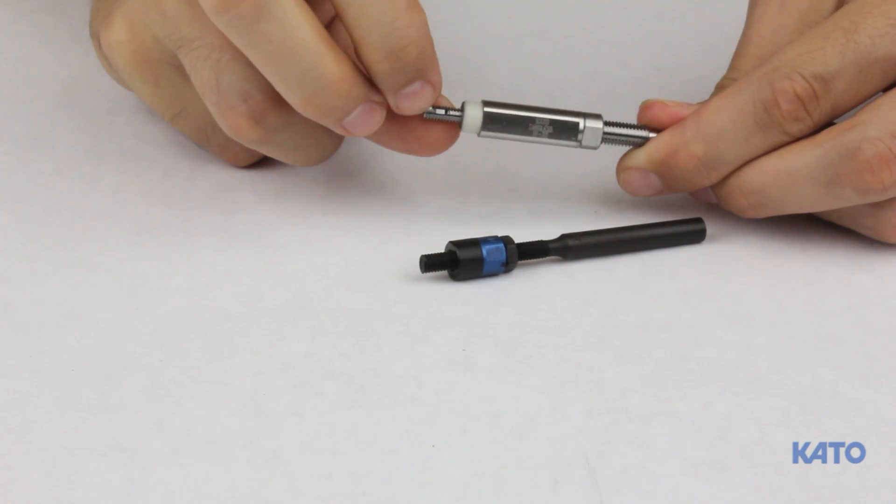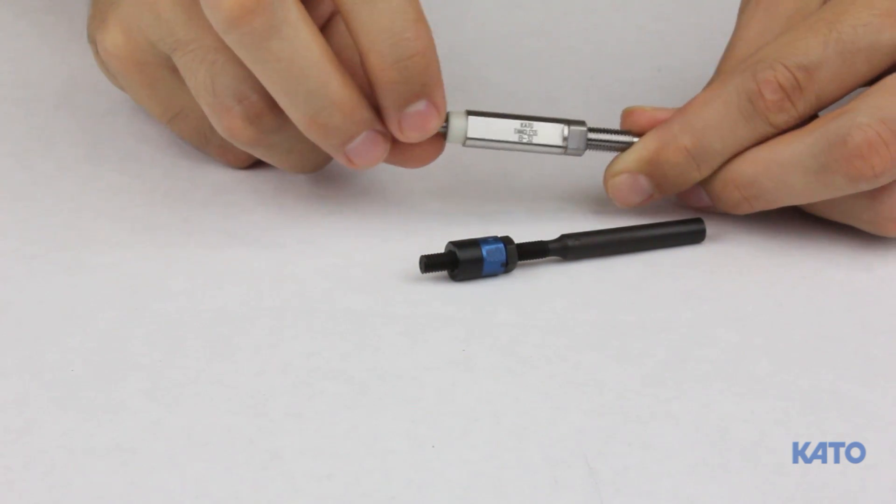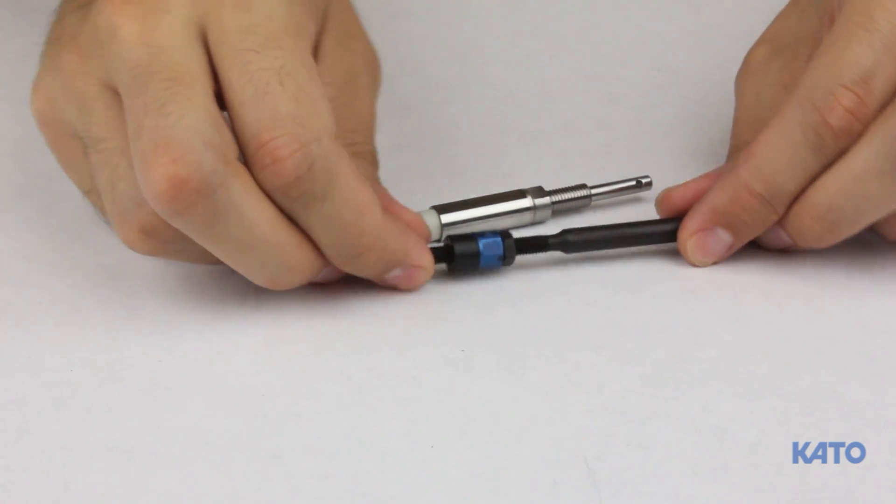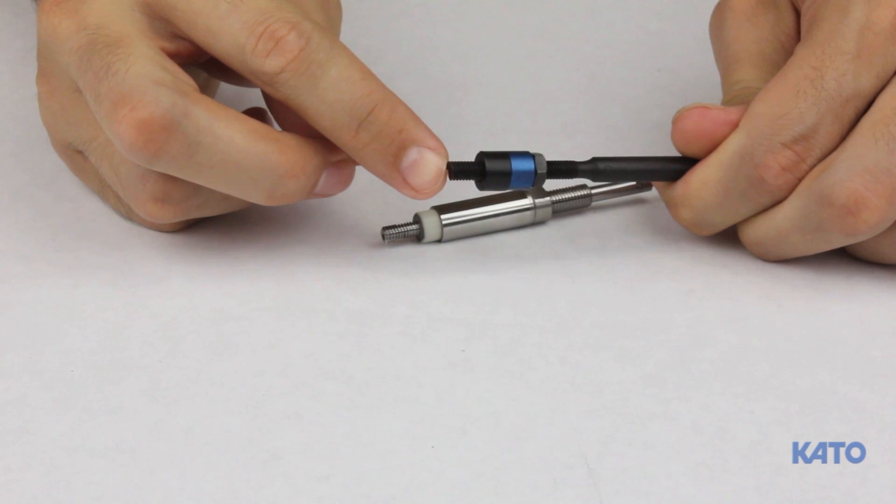Inside the tangless mandrel is the spring-loaded pivoting pawl. This is the part that will grab the insert and drive it into the STI tapped hole. The tanged mandrel has a drive contour that will grab hold of the tang and drive the insert into the STI tapped hole.